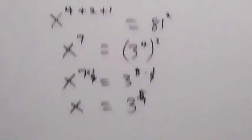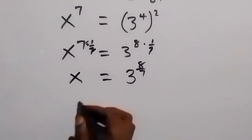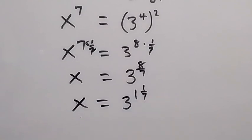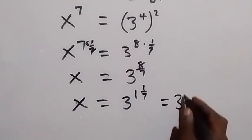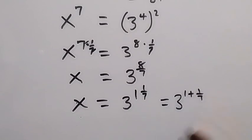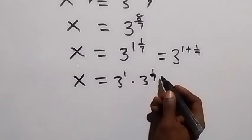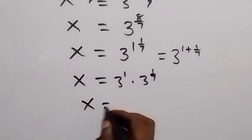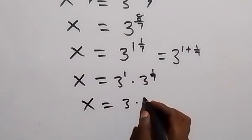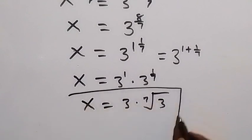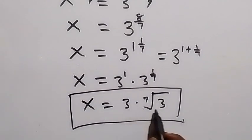We can write this as x equals 3 raised to the power 1 and 1 over 7, which we can separate as 3 raised to the power 1 plus 1 over 7. From the law of indices, this is x equals 3 raised to the power 1, times 3 raised to the power 1 over 7. We can write this fractional power as x equals 3 times the 7th root of 3. So the value of x is 3 times the 7th root of 3.